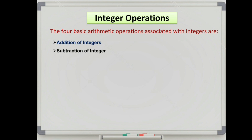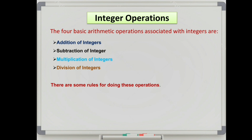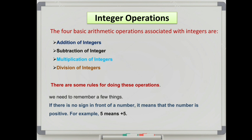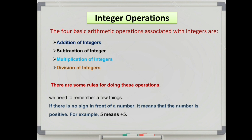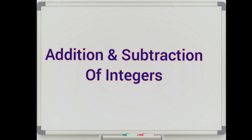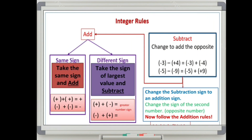Before we start learning these methods of integer operations, we need to follow some rules. Remember: if there is no sign in front of a number, it means that the number is positive. For example, 5 means plus 5. In the previous class we have learnt addition and subtraction in detail. Let us have a small recap.